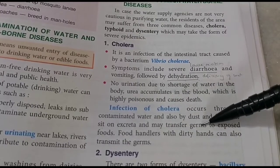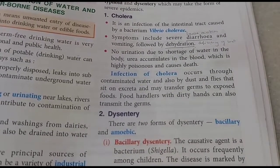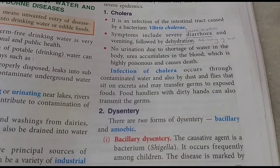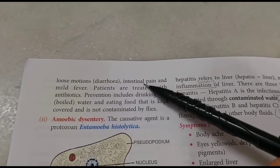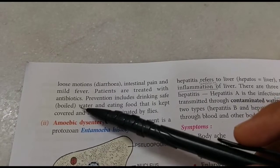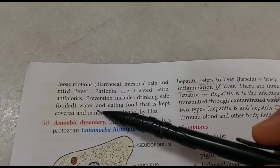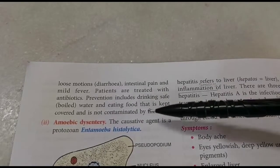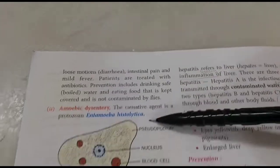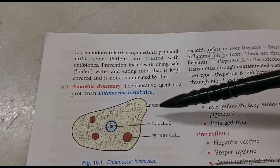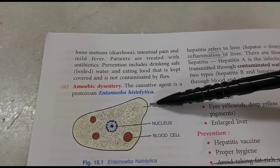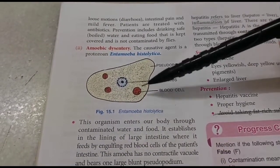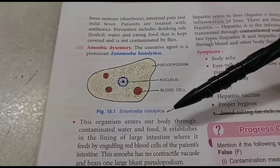Dysentery can be bacillary or amoebic. Bacillary dysentery is caused by the bacteria Shigella and is common among children, with symptoms of diarrhea, intestinal pain, and mild fever - antibiotics can treat it. During an epidemic, drink boiled water and keep food covered. Amoebic dysentery is caused by the protozoan Entamoeba histolytica, which uses pseudopodia to move and engulf particles - it infects the lining of the large intestine through contaminated food and water.